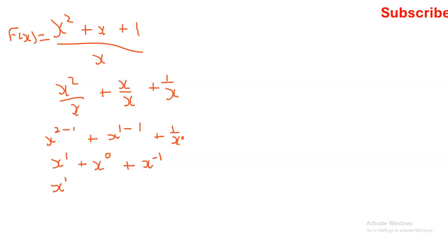Remember: any number to the power of zero in maths, whether it's a letter or number, is always equal to one. Then this last term simplifies to x to the power of negative one. At this stage we are just simplifying — our aim was to get everything as exponents before we find the derivative.